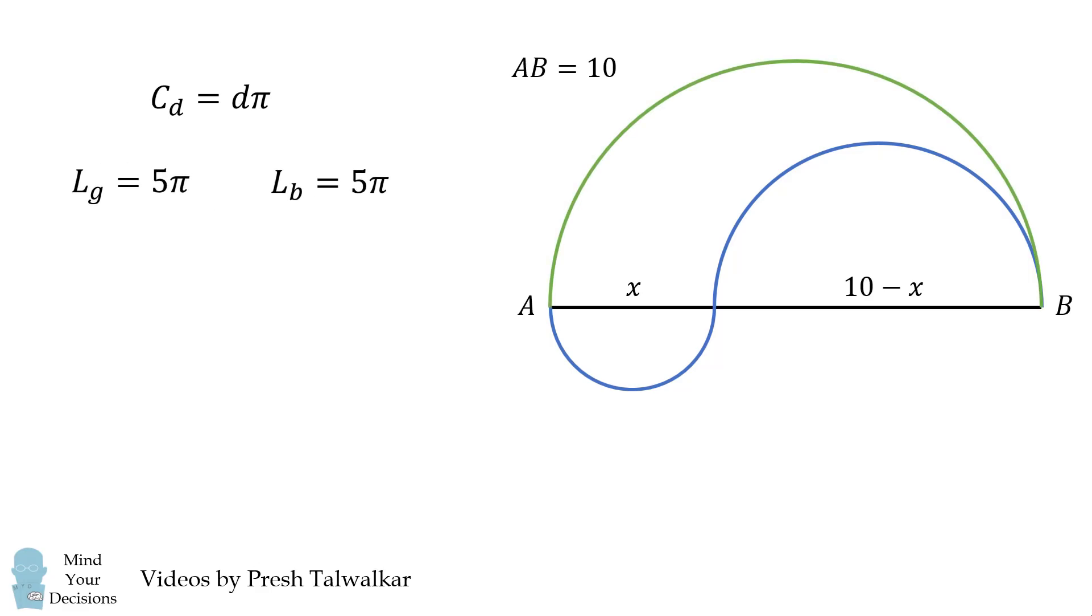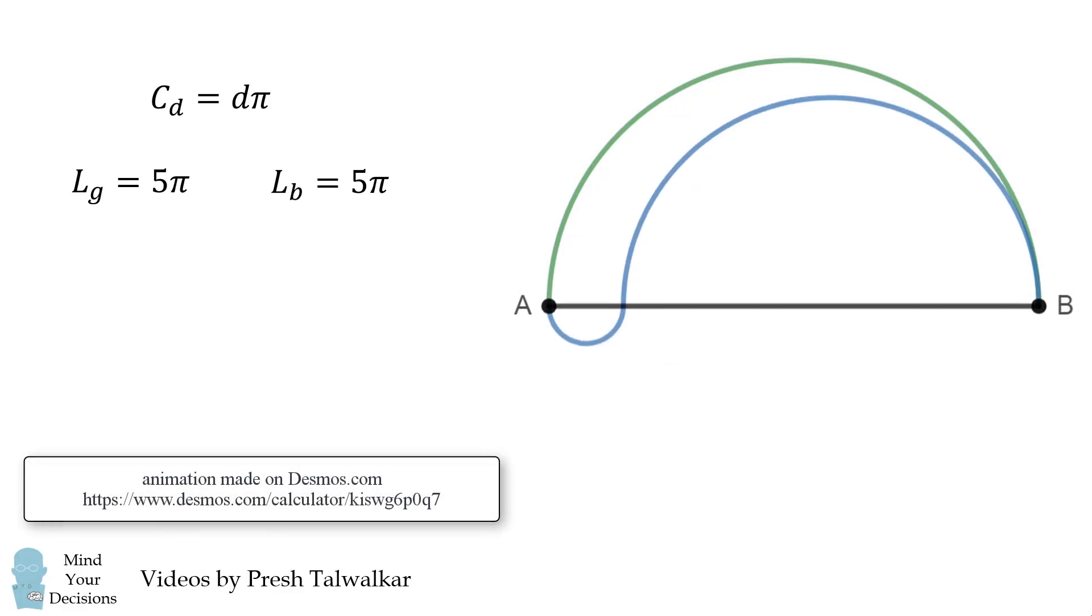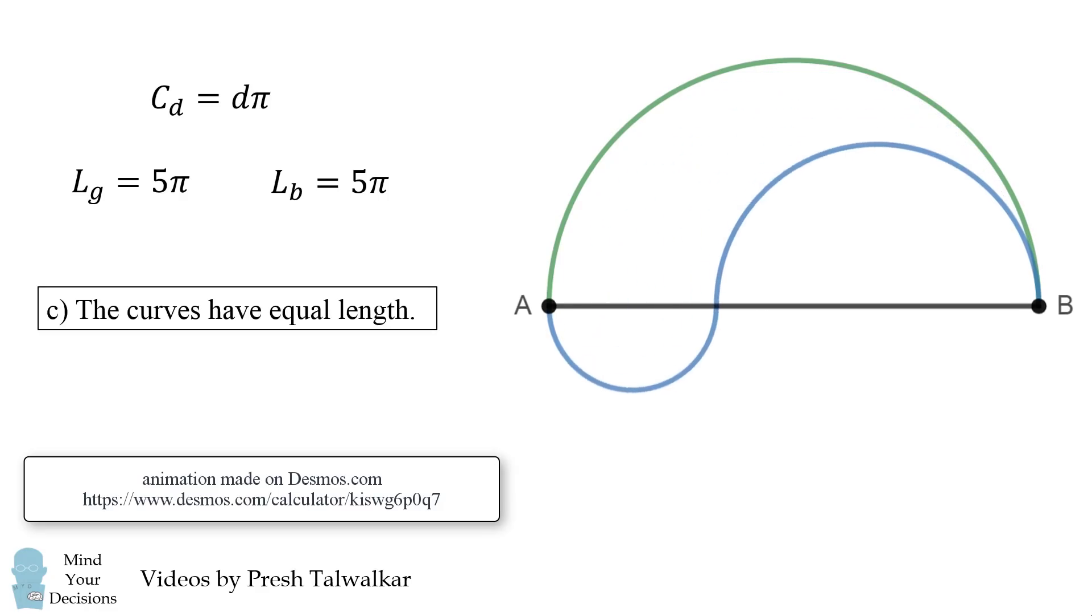And now we can answer the question. Both of the curves have exactly the same length of 5π, and it's true regardless of the value of x. So the answer is C. The curves have equal length.